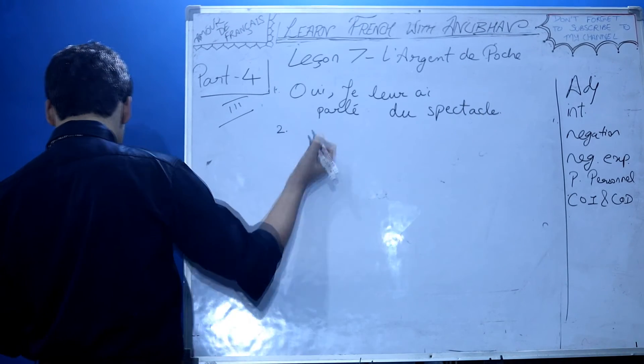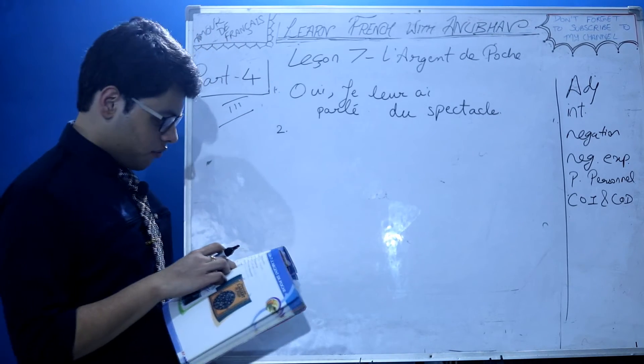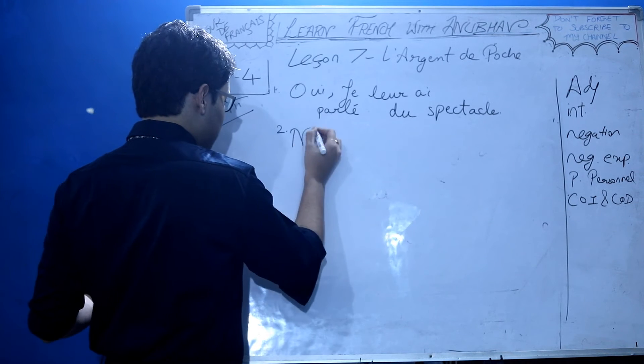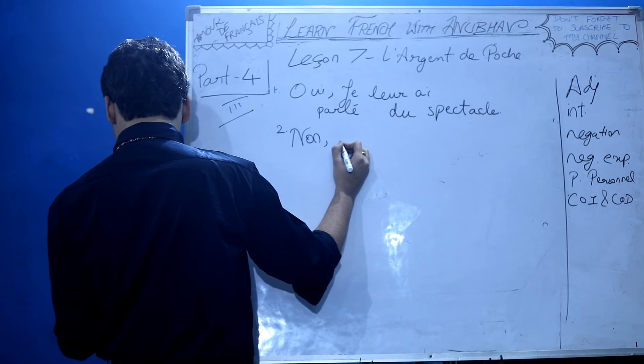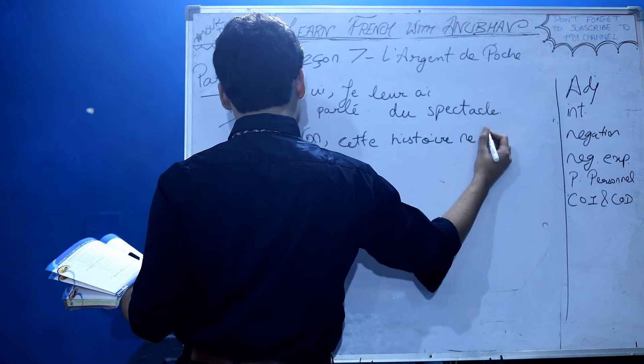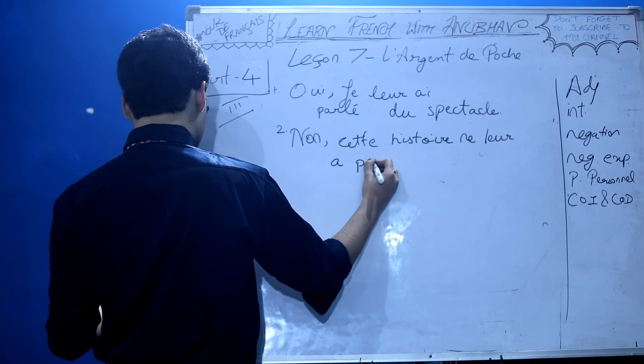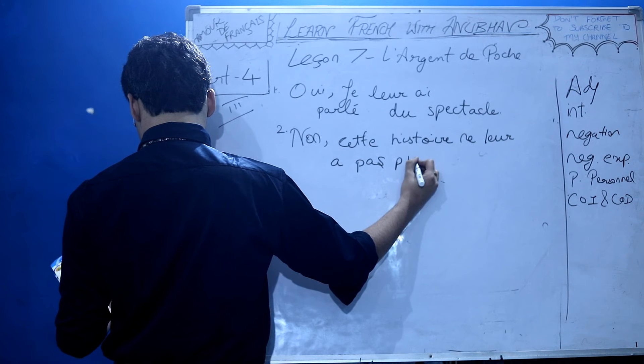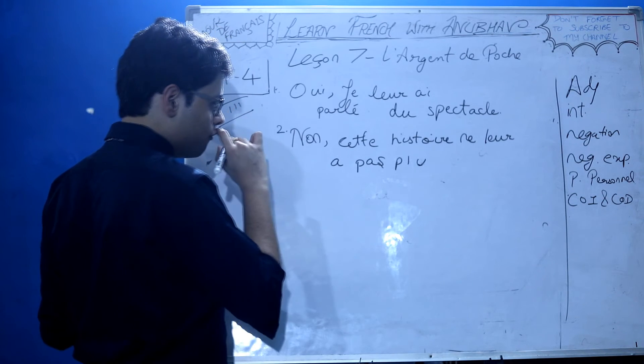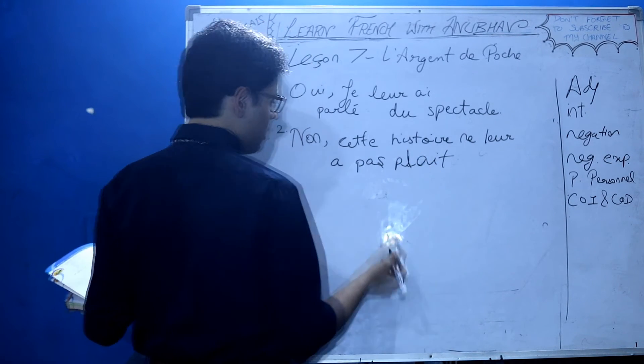Second: Est-ce que cette histoire a plu aux enfants? Aux enfants needs to be replaced. Answer needs to be negative. No. Cette histoire ne leur a pas plu. But I think it should be 'plu' instead of 'blue' - it's a misprint. I believe it should be plu.